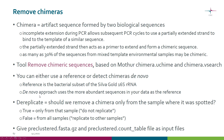For the de novo approach you also need to decide if you want to dereplicate or not. This means: should we remove a chimera only from the sample where it was spotted? If you set it to true, we remove the chimera only from that sample. If you set it to false, we remove the chimera from all the samples. You can think of dereplicate true as 'do not replicate' and dereplicate false as 'replicate to other samples'. The developer of Mothur recommends setting this to true because otherwise the effect can be rather harsh.